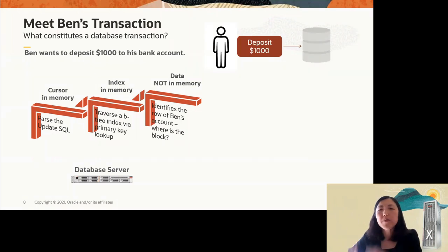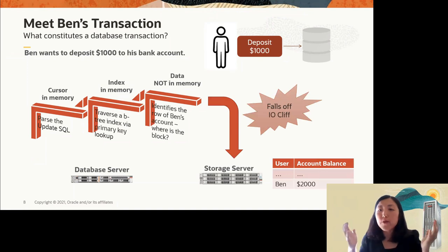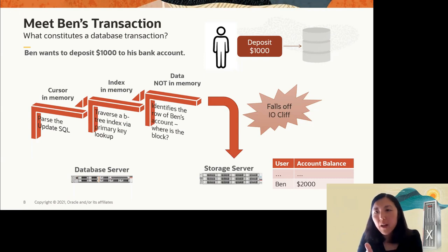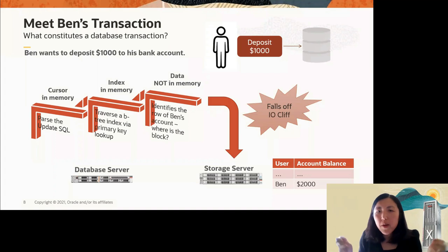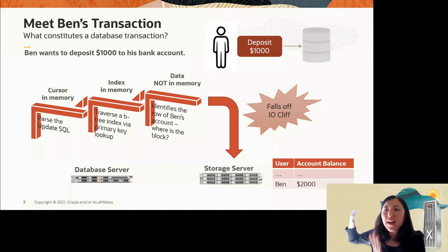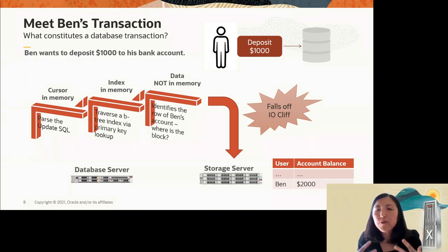If the block isn't in any neighbor's cache either, we have no option but to go to storage. This is what I call falling off the IO cliff. For the previous steps — parsing, B-tree traversal, finding the block — all data was in memory running at CPU cache speed. But as soon as there's a cache miss, execution grinds to a halt waiting for IO to come back from the storage server on the other end of the network.